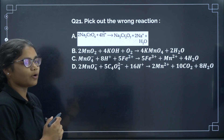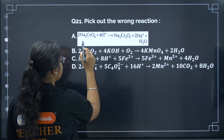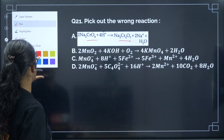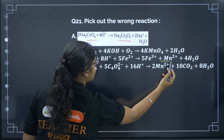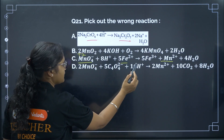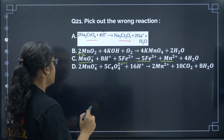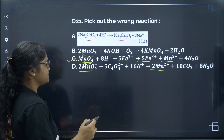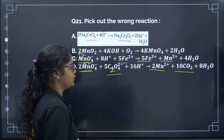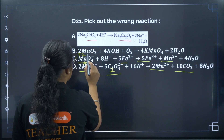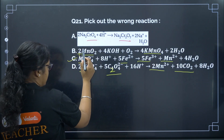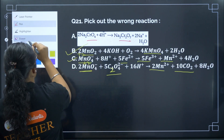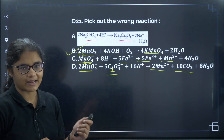Question 21: Pick out the wrong reaction. Na₂CrO₄ being converted to Cr₂O₇²⁻ is a correct reaction. MnO₄⁻ (+7) being reduced to Mn²⁺ while Fe²⁺ is oxidized to Fe³⁺ is correct. MnO₄⁻ oxidizing C₂O₄²⁻ to 2CO₂ is also correct. However, the reaction showing MnO₂ being converted to MnO₄⁻ has no accompanying reduction reaction, so it is not a valid redox reaction. The correct answer — the wrong reaction — is option B.